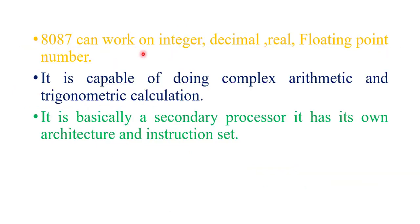8087 can work on integer, decimal, real, floating point number. It is capable of doing complex arithmetic and trigonometrical calculation. It is basically a secondary coprocessor. It has its own architecture and instruction set.